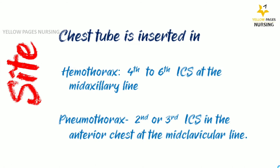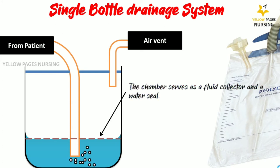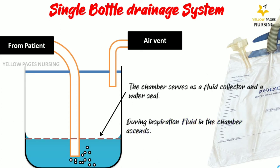Let's look at the types of drainage systems: single bottle, double bottle, and three-bottle drainage systems. In the single bottle drainage system, the chamber serves as both a fluid collector and a water seal. During inspiration, fluid in the chamber ascends, and during expiration, fluid descends.